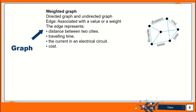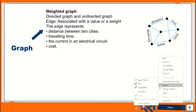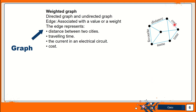Next we are going to look at weighted graph and unweighted graph. For a weighted graph, it can be a directed graph or an undirected graph. The edge is associated with a value or a weight. The edge can represent distance between two cities, traveling time, the current in an electrical circuit, and also the cost. The weighted graph can be represented with distance, cost, time, names of people, favorite food, favorite game, and so on.